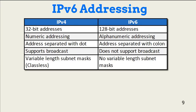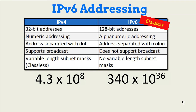Now let's look at IPv6. IPv6 was needed because of the expected saturation of the IPv4 address space — in other words, we're running out of IPv4 addresses, which we did in 2011. While IPv4 supports a global 4.3 billion addresses, or 4.3 times 10 to the 8th, IPv6 supports over 340 undecillion, or 340 times 10 to the 36th.